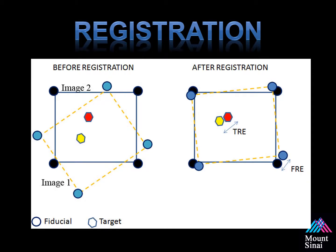This is a simplified example. On the left you have two image data sets — image 1 and image 2. Notice how they're not aligned. Well, after registration, or lining up the squares or the triangles, you're able to put the two image data sets together. The difference between your intended target and the actual target is target registration error, or TRE.